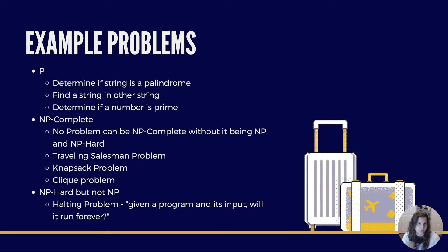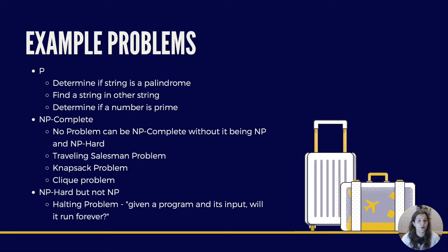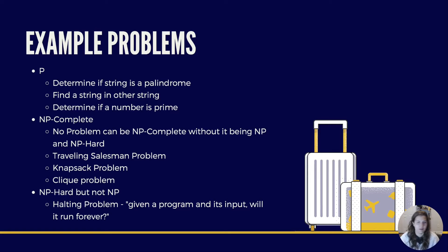The traveling salesman problem is very famous and you'll run across it when working as a software engineer, because it has applications in planning, logistics, and manufacturing. Other NP complete problems include the knapsack problem — given a set of items each with a weight and a value, determine which items to include so the total weight is within a limit and the total value is as large as possible. Another example is the clique problem, which involves finding cliques — subsets of vertices all adjacent to each other — in graphs.